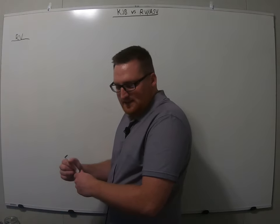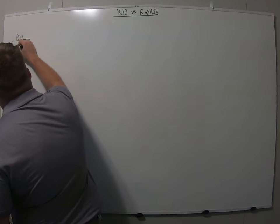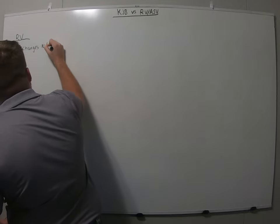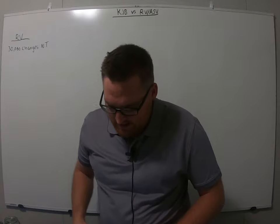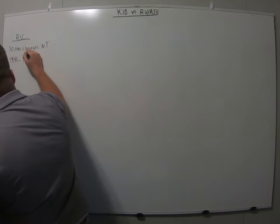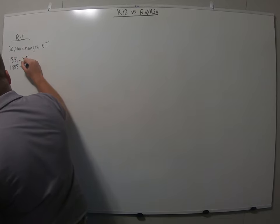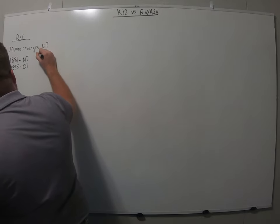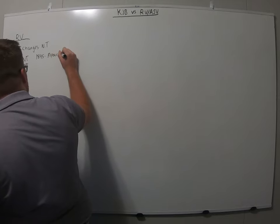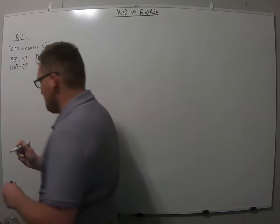In this new Bible here, it has made over 30,000 changes in the New Testament alone. The New Testament was completed in 1881 and then in 1885 the whole thing was, so was the Old Testament. And then in 1895 the Apocrypha was added. And then 1901 we have the New American Standard Version.